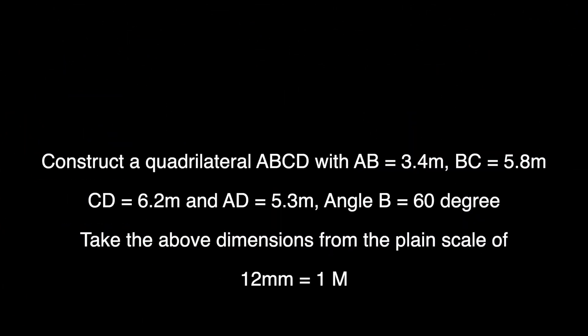Welcome to technical drawing. Today we are going to construct a quadrilateral ABCD with side AB 3.4m, BC 5.8m, CD 6.2m and AD 5.3m. Angle B is 60 degrees. Take the above dimensions from the plane scale of 12mm equals to 1m.